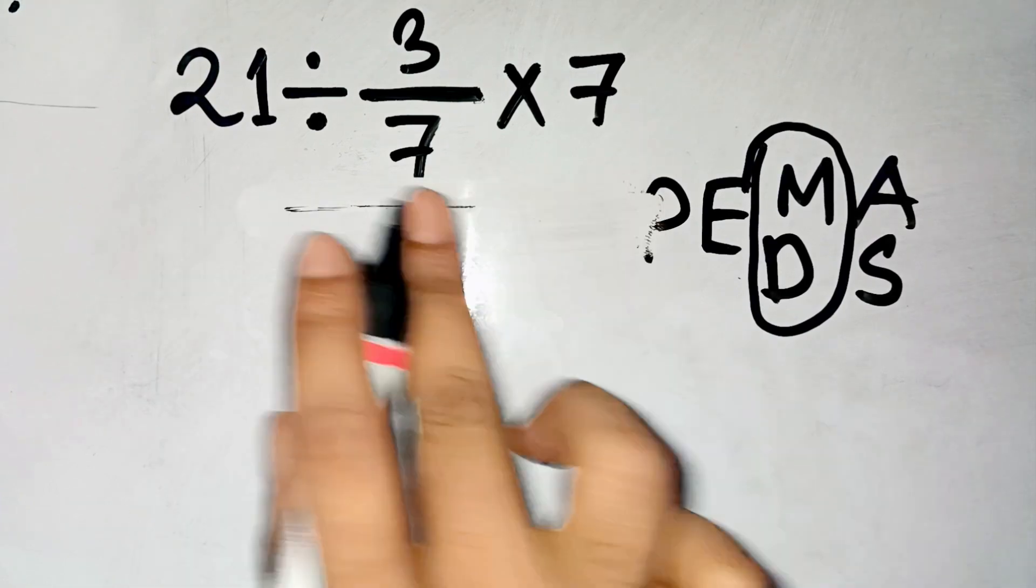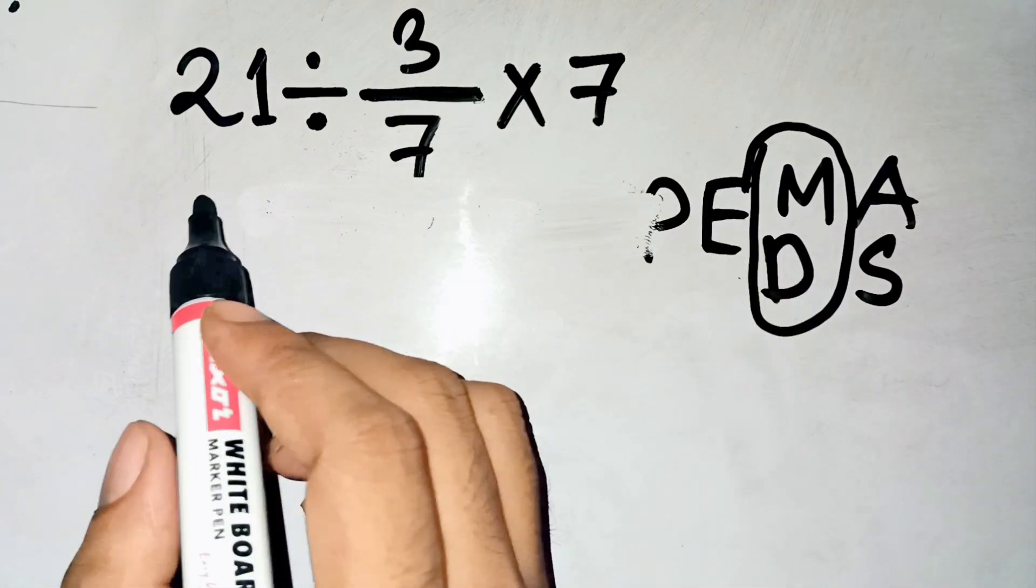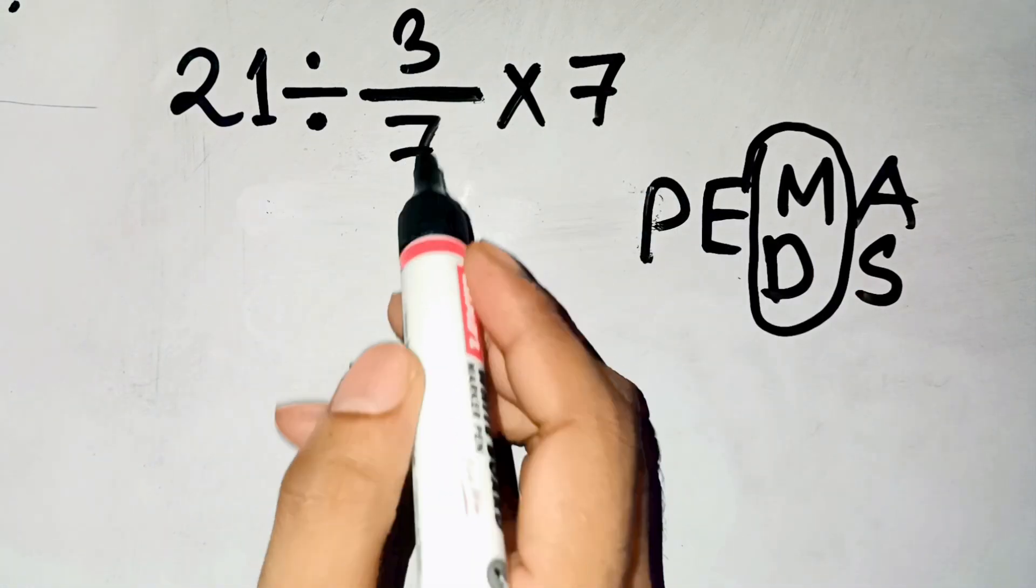So let's apply that properly. Start from the left. 21 divided by 3 over 7 times 7. We first do 21 divided by 3 over 7.